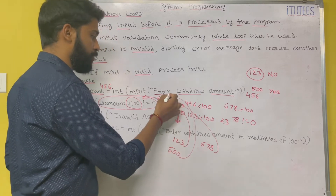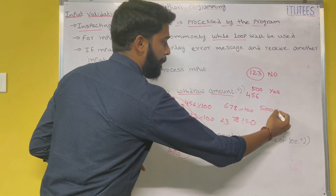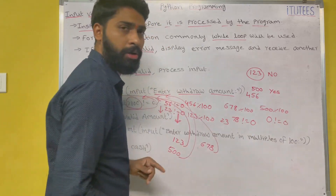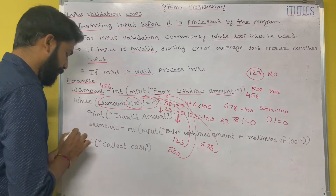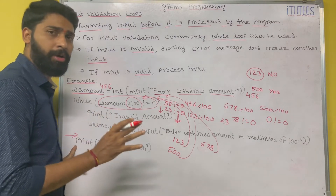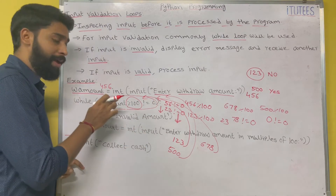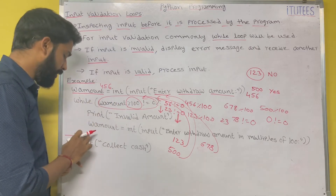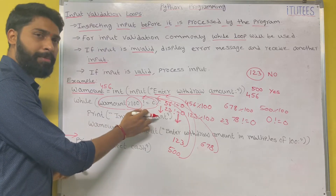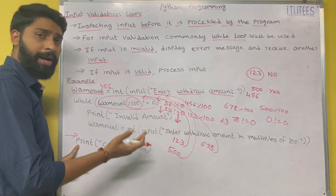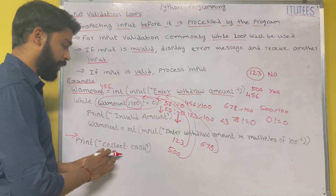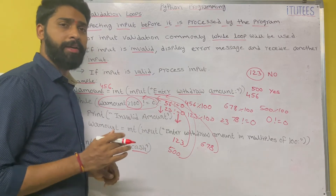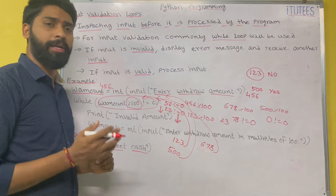Now I enter 500. Again the control goes to the condition: 500 percentage 100 is 0. 0 not equals to 0 is false, so we exit the loop and process the data. I hope you all understand how we validate this input using the while loop. If the user entered a valid amount, then it prints 'Collect Cash'. I hope you all understand how to validate input in Python.